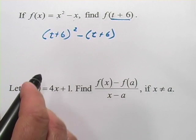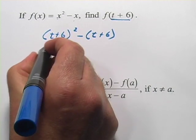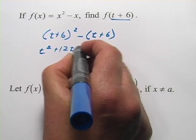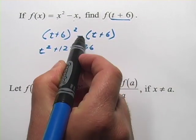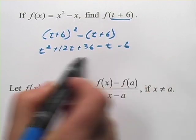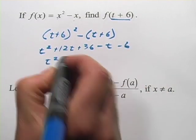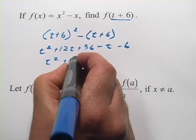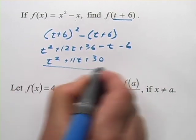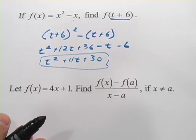So, we're going to go ahead and foil out the t plus 6 squared. We'd get t squared plus 12t plus 36, and then here, we'll distribute the negative sign in, minus t minus 6, and then when we simplify that, we get t squared plus 11t plus 30. And that is our answer.